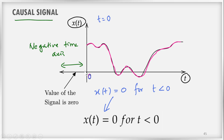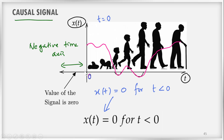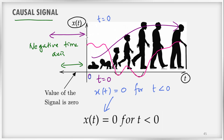We call such signals causal signals. For an analogy, we can take the example of the birth of a child. If he is born today, we take t=0 for today. We are sure that he was not physically present on this earth yesterday, the day before, the previous month, or the previous year. This is an analogy corresponding to the causal signal.